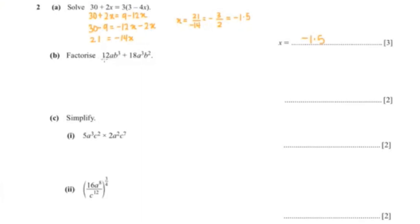The next question wants us to factorize. As you can see, 12 and 18 are multiples of 6, so we can factorize 6 out. That would be 2ab cubed plus a cubed b squared.